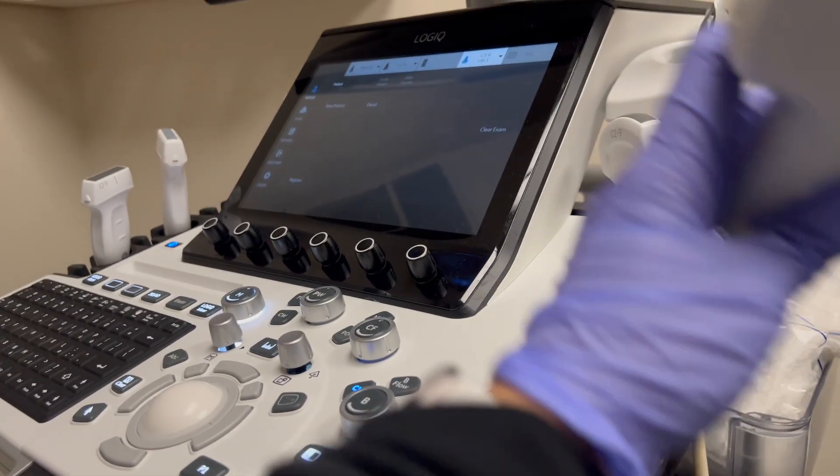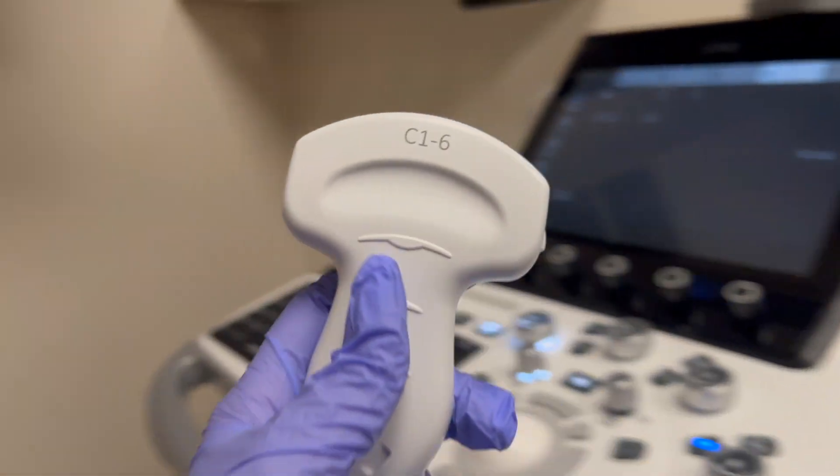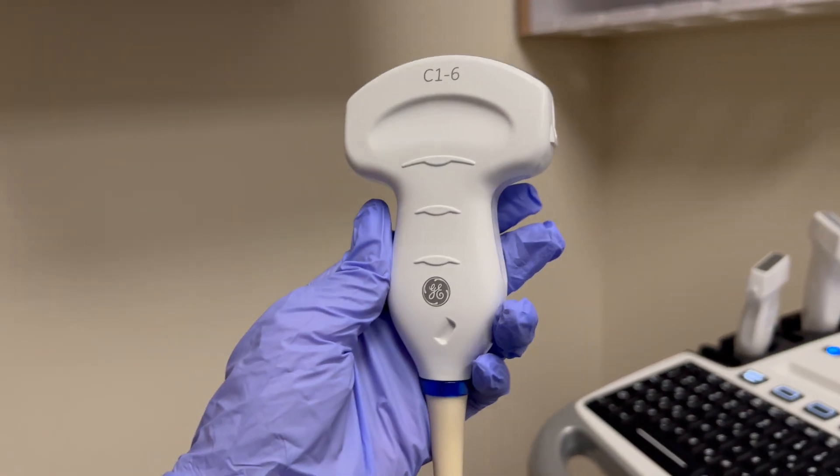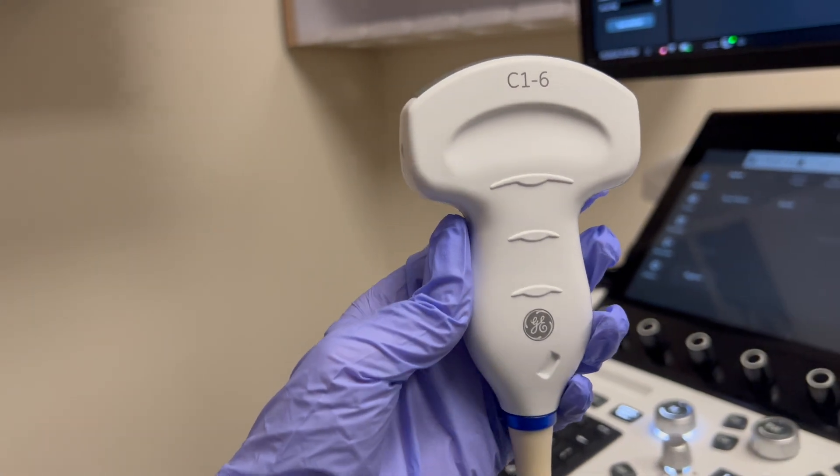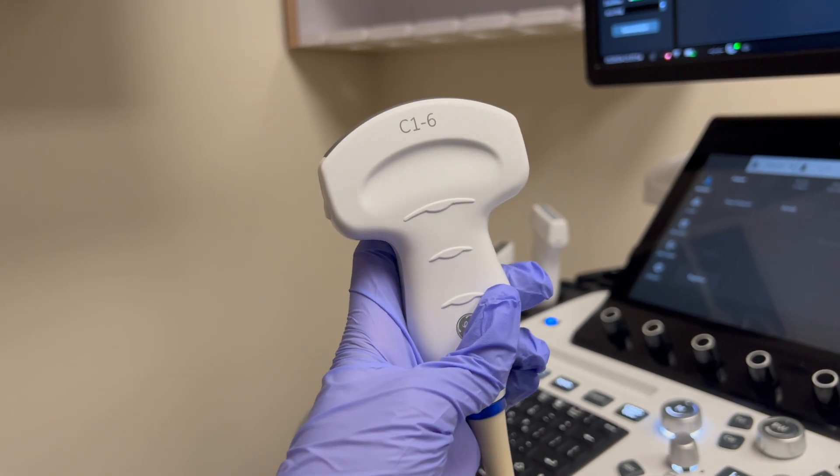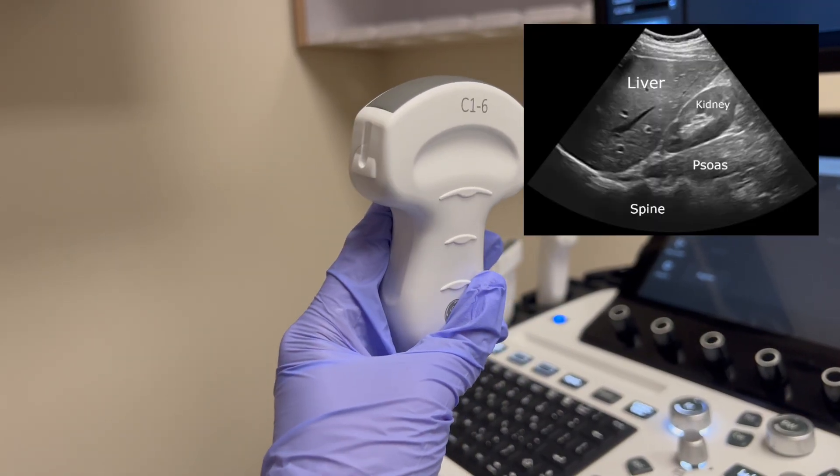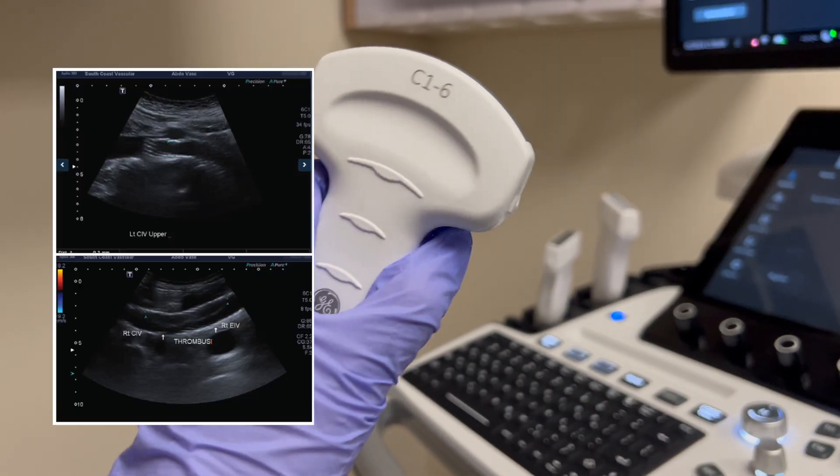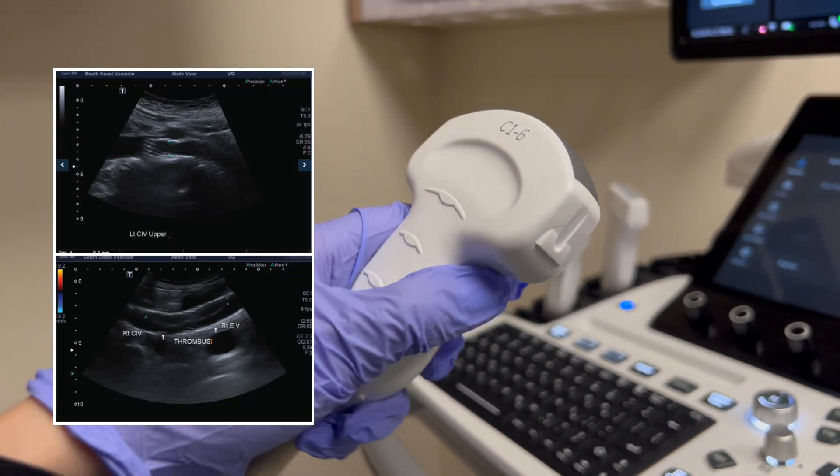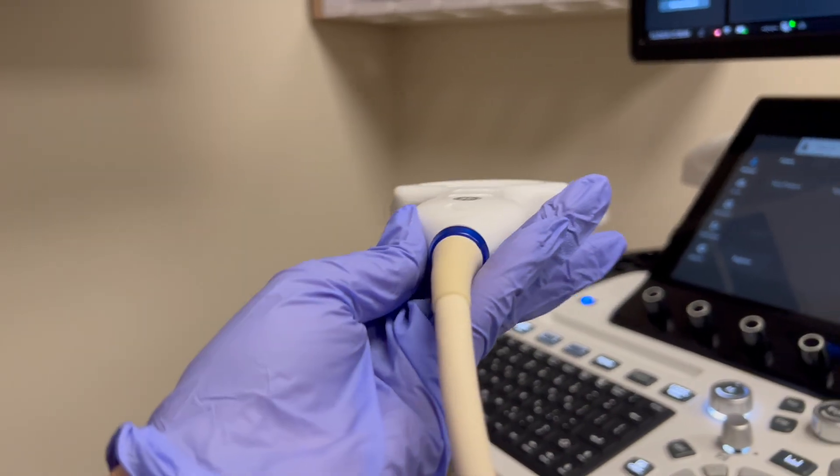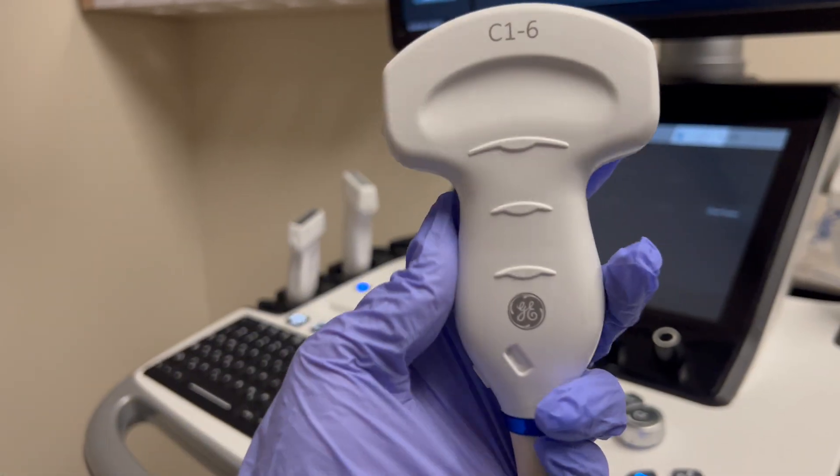The next two probes I'm going to share with you are the curve 6 and curve 9 probes. The differences between the two are the size and frequency of the probes. The curve 6 is the one I use for exams like abdomens, renals, and sometimes I'll even use it for venous studies of the legs or arterioles if the patient has large or swollen legs. You don't need to limit yourself to one type of probe.